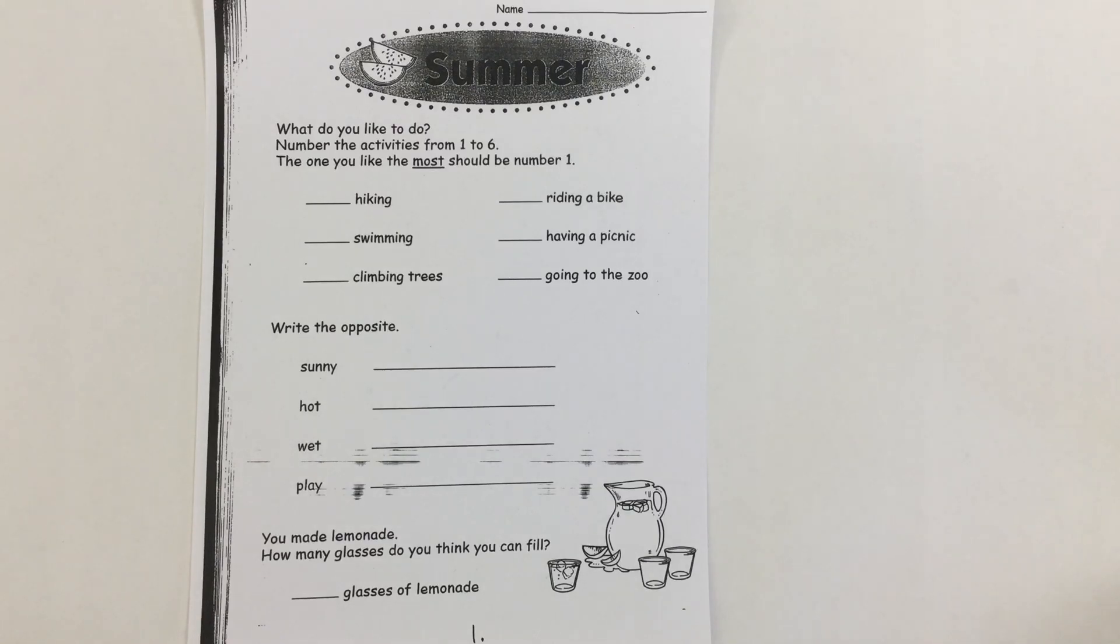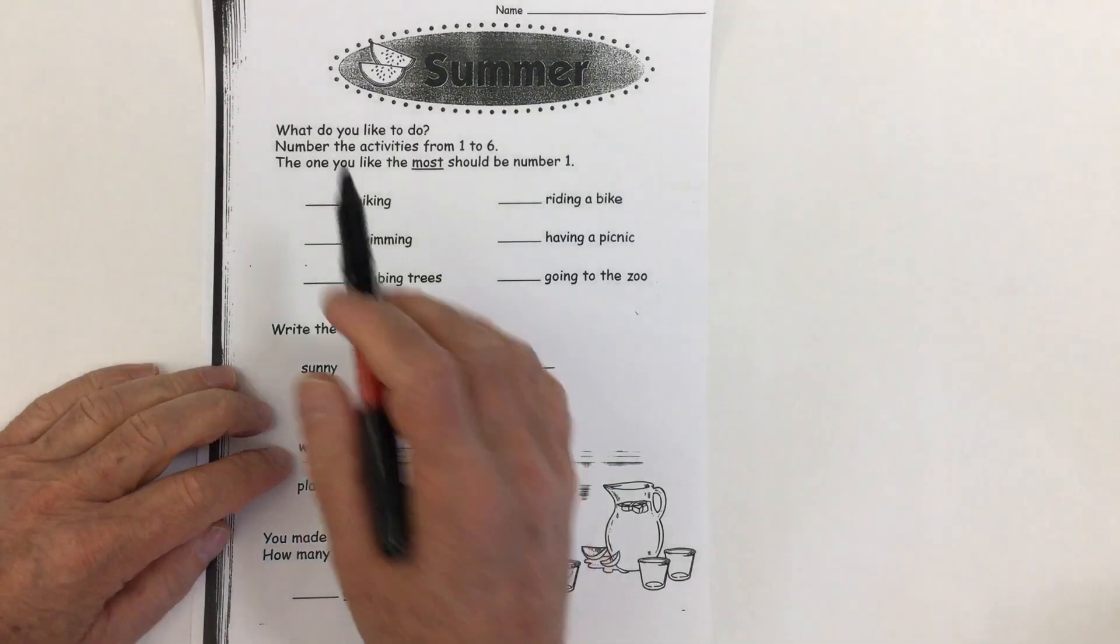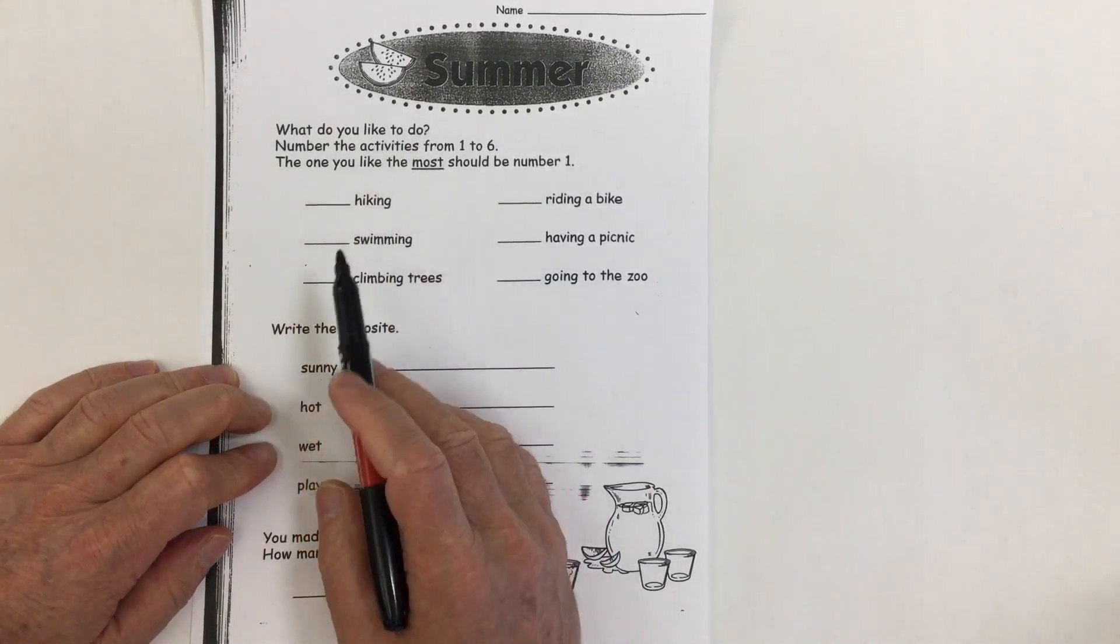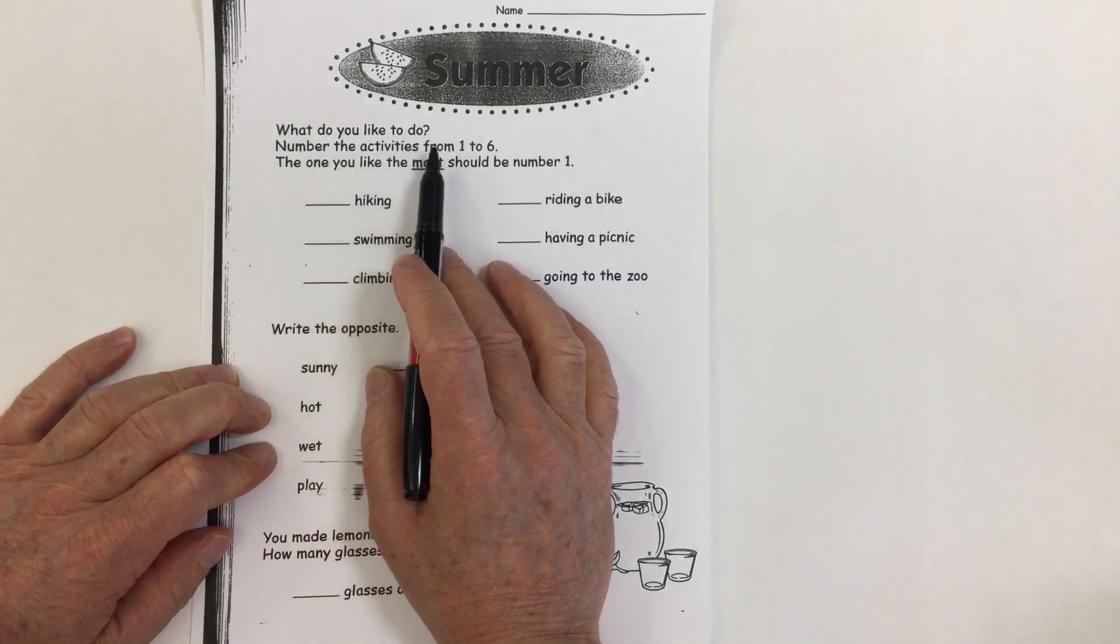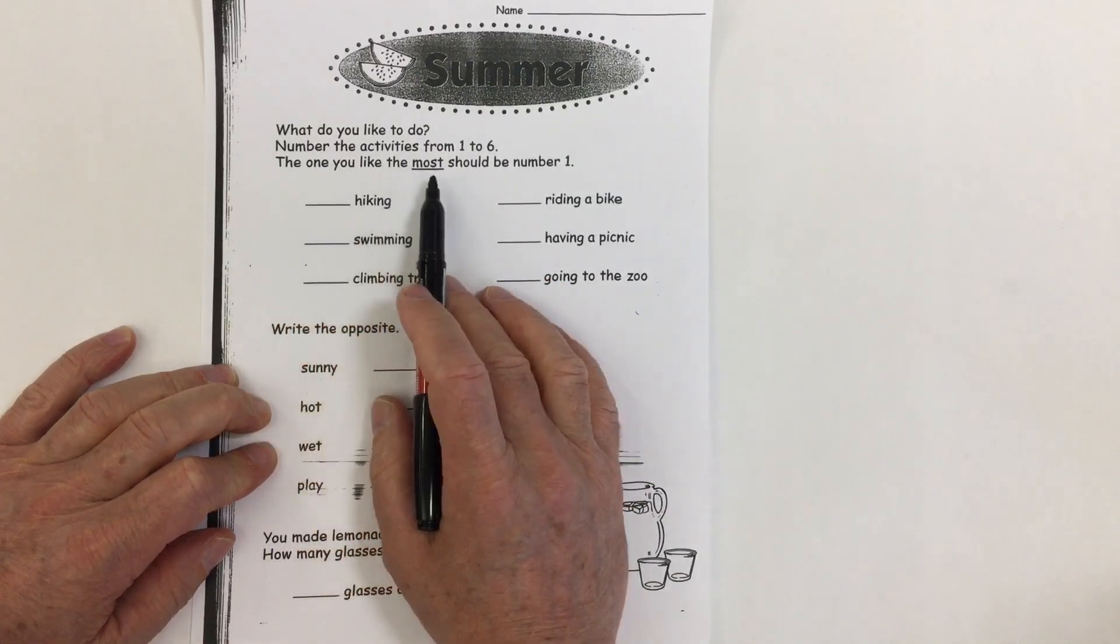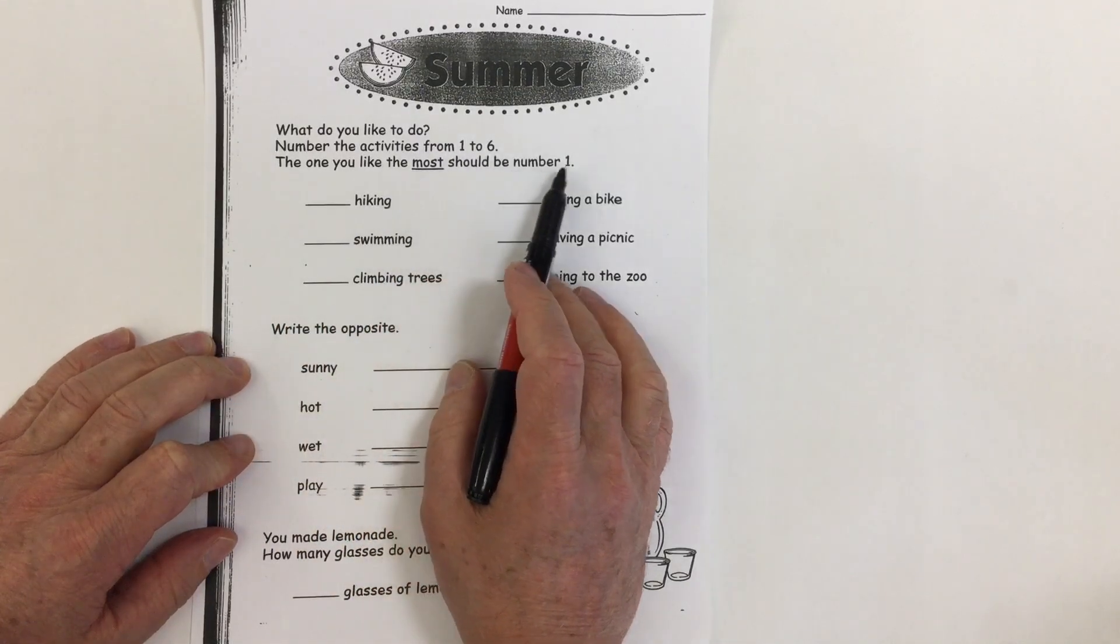This is a worksheet about the theme of the season's summer and it says what do you like to do? Number the activities from one to six. The one you like the most should be number one.